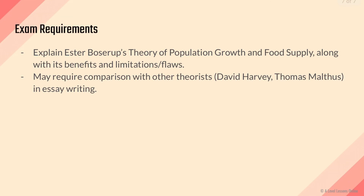That's all for this entire chapter — it's quite simple. For exam requirements, you just need to be able to explain Esther Boserup's theory of population growth and food supply along with its benefits and limitations, and you may be required to compare her to David Harvey and Thomas Malthus in essay writing. Esther Boserup is a highly optimistic person who believes that technology is the key, and it indeed is — it has helped us a lot in curbing food shortages around the world.